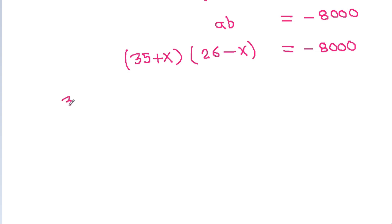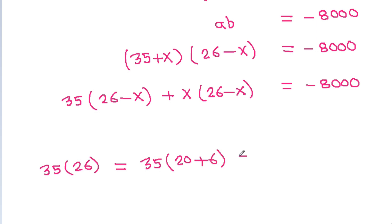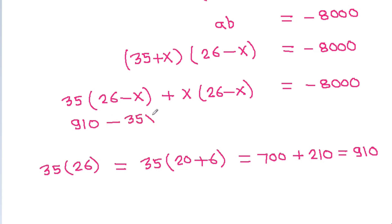And a times b is (35 + x)(26 − x) equals minus 8000. Expanding: 35 times 26 minus 35x plus 26x minus x². Now 35 times 26 is 35 times 20 plus 35 times 6, which is 700 plus 210, giving 910. So we have 910 minus 35x plus 26x minus x² equals minus 8000.